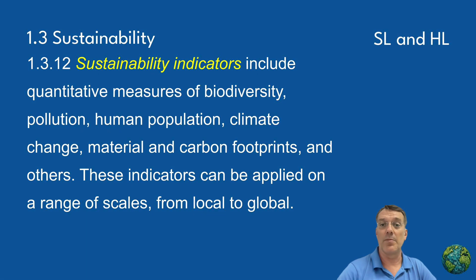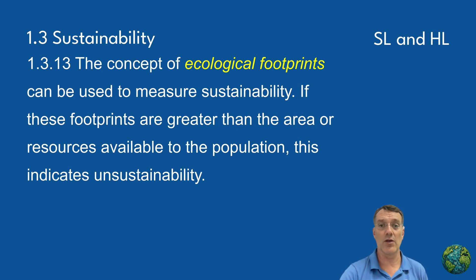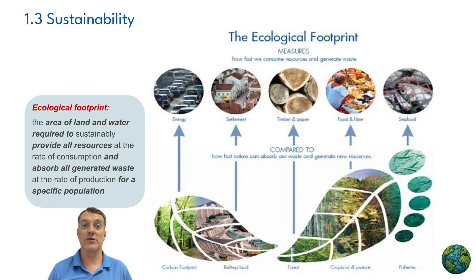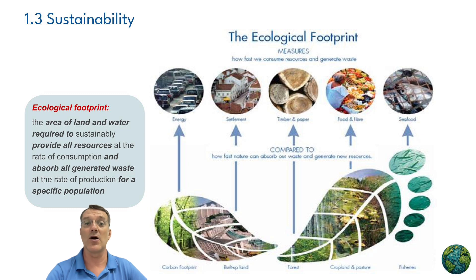These indicators help us understand where we stand in terms of sustainability and where we need to improve. The ecological footprint is a measure of the area of land and water required to sustainably provide all the resources at the rate of consumption and absorb all generated waste for a specific population.